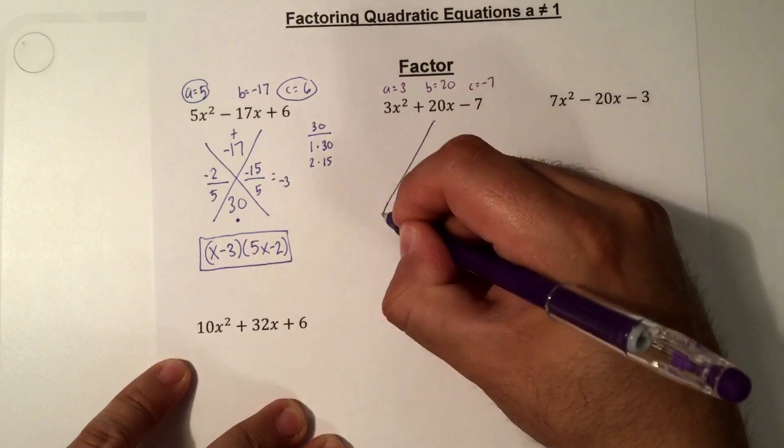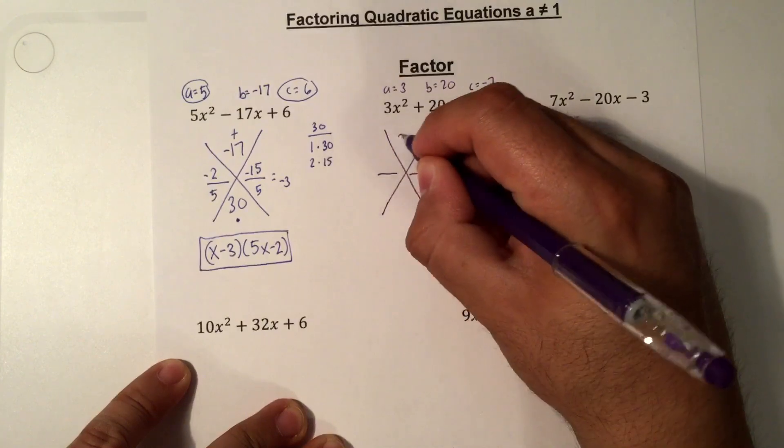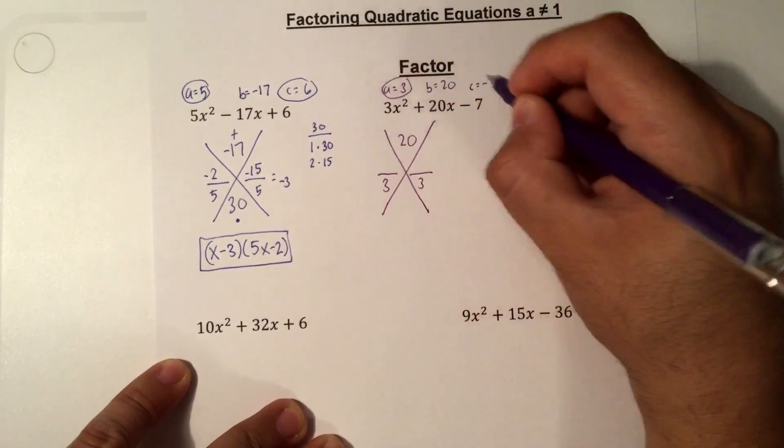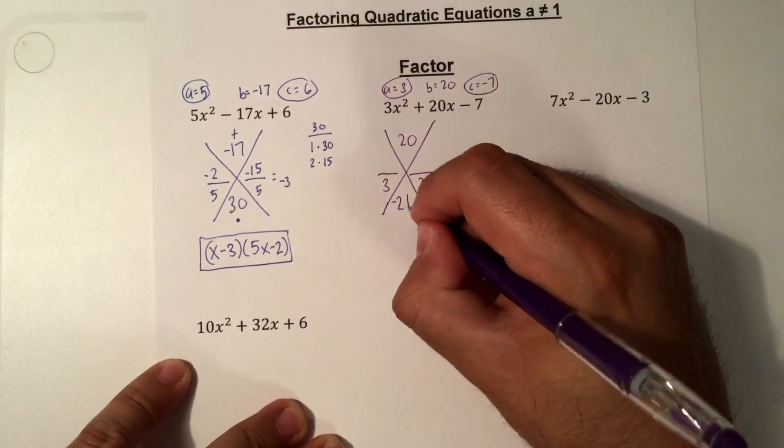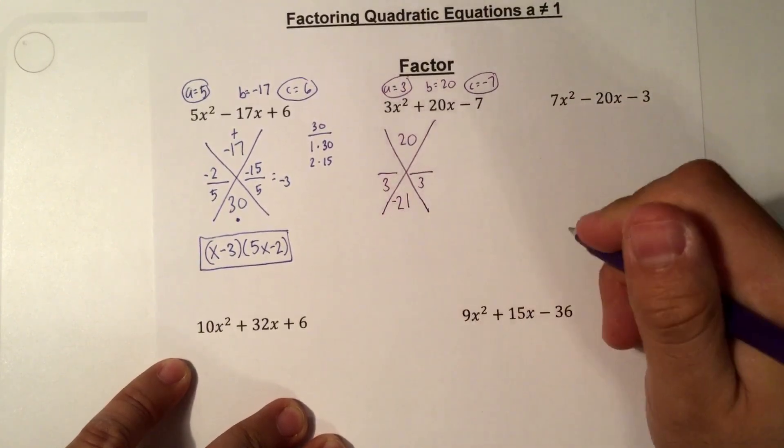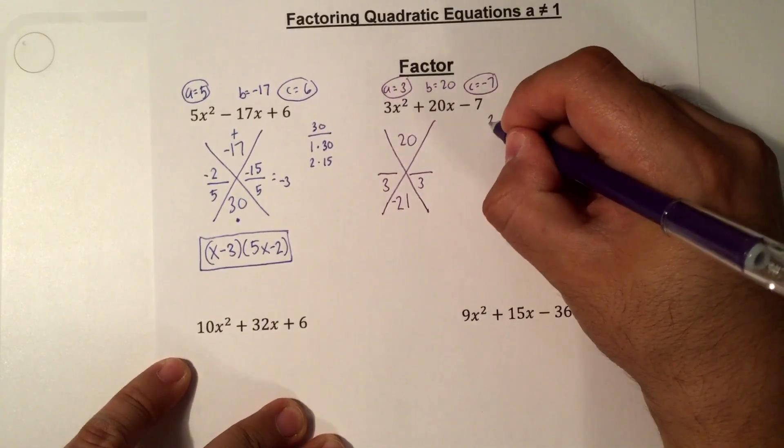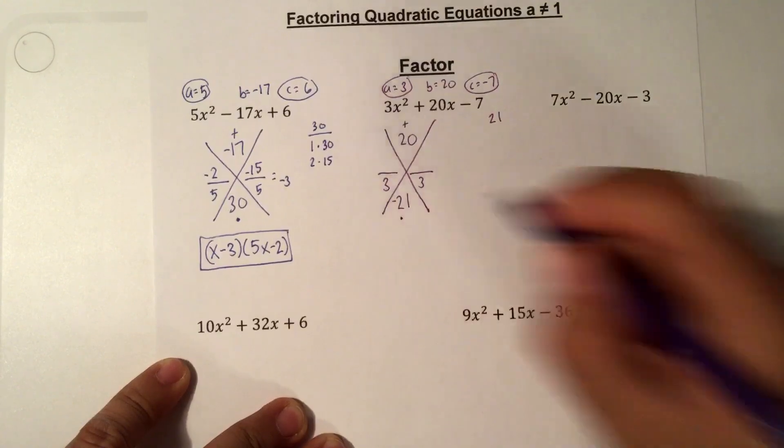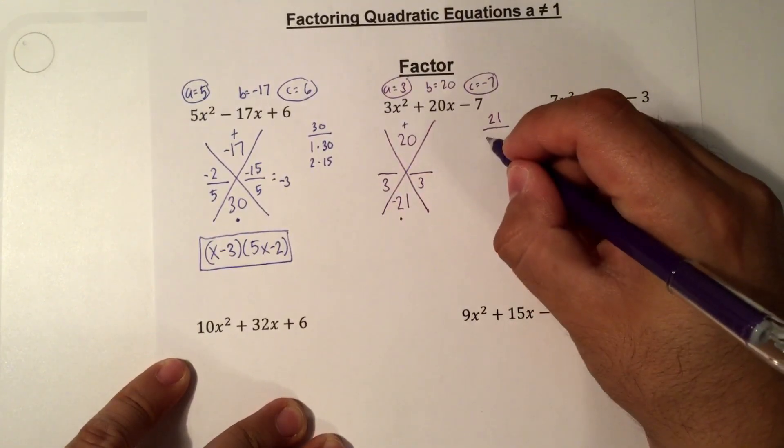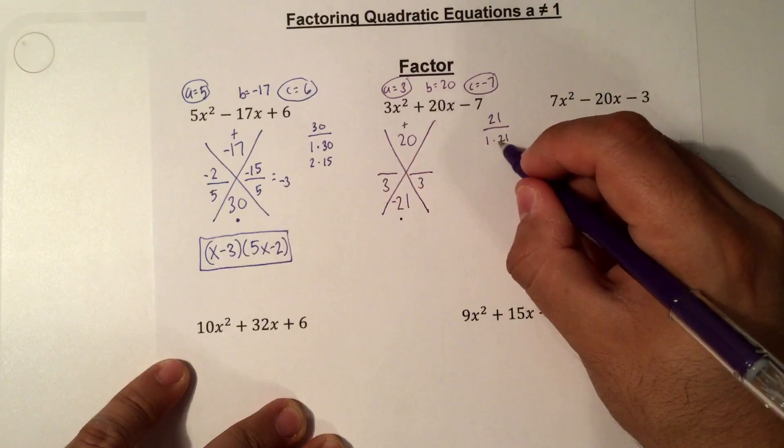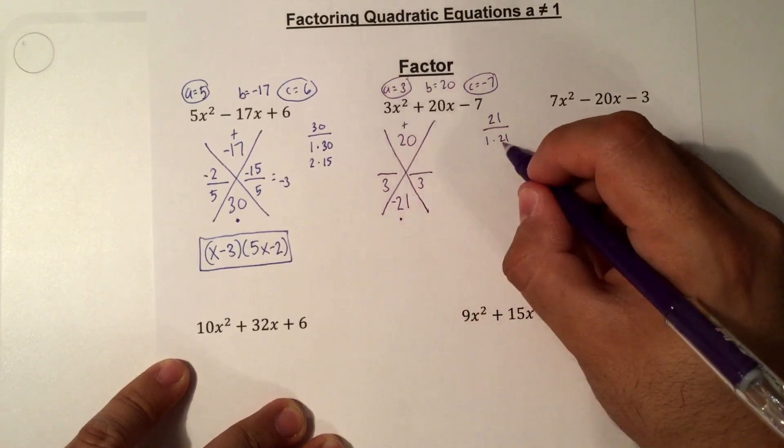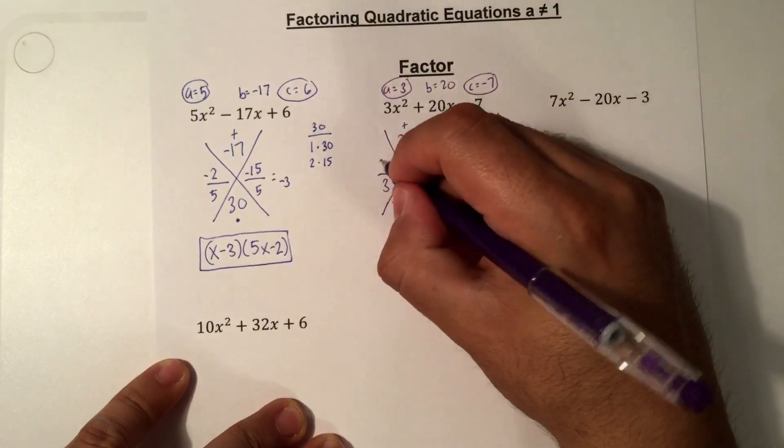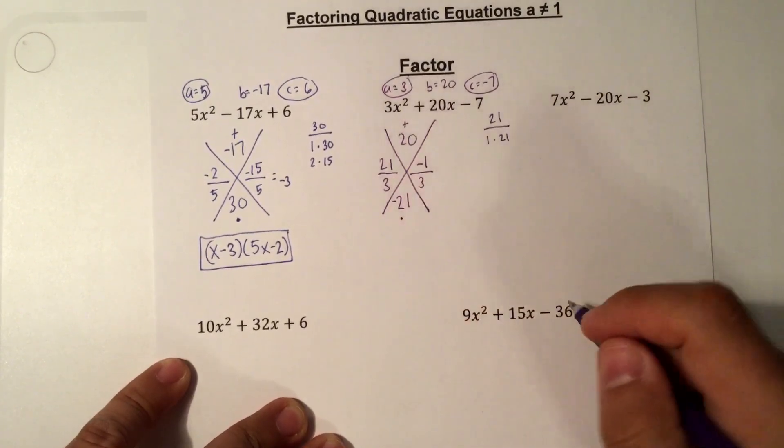x method. b goes at the top, which is 20. We divide by a, which is 3. And on the bottom, a times c. So 3 times negative 7 is negative 21. Factors. So I'm going to use 21, because that's the number at the bottom. Two numbers that add to 20, but multiply to negative 21. So factors of 21 are 1 times 21. 1 plus 21 is 22. That doesn't work. 21 minus 1 is 20. So we've got 21 and 1. So 21 minus 1.